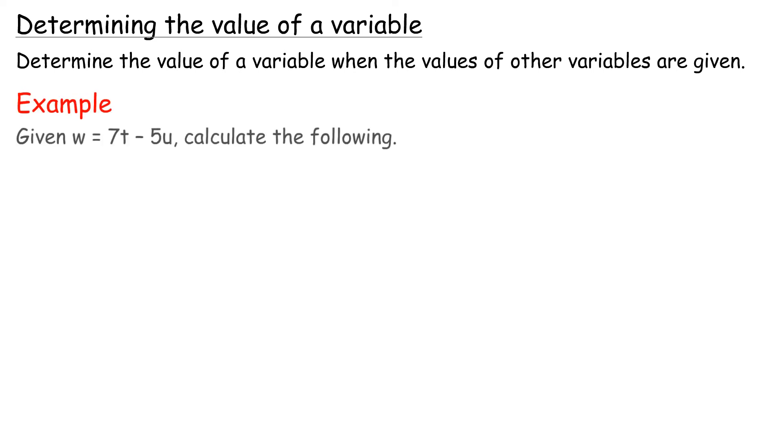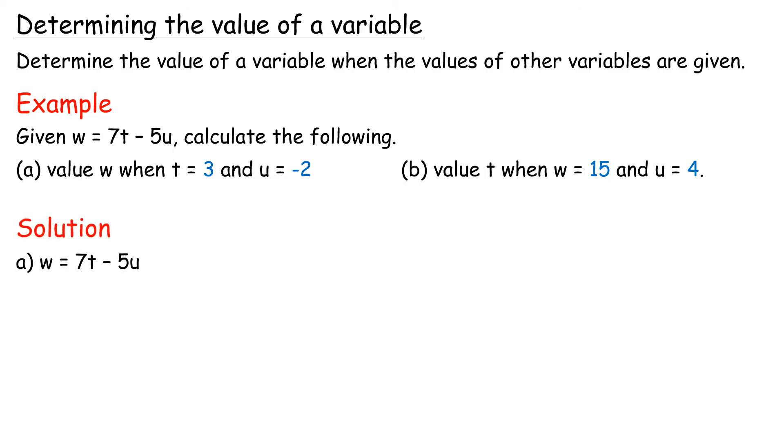Determining the value of a variable. Determine the value of a variable when the values of other variables are given. Given w equals 7t minus 5u, calculate the following: a, value w when t equals 3 and u equals negative 2. b, value t when w equals 15 and u equals 4. Solution. a, substitute t equals 3 and u equals negative 2 into the formula. w equals 7 times 3 minus 5 times negative 2 equals 21 plus 10 equals 31.